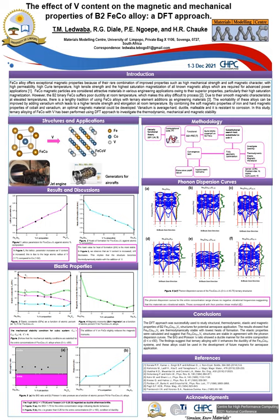Alloys of iron cobalt constitute an important class of soft magnetic materials. This class of materials offers exceptional magnetic properties because of their rare combination of good properties such as high mechanical strength, soft magnetic character with high permeability and high saturation magnetization. These alloys find applications in aircraft generators and jet engines, among others. Unfortunately, while this material has good magnetic properties, they suffer poor ductility at room temperature.